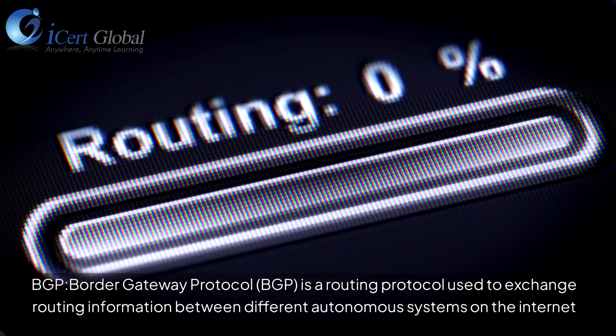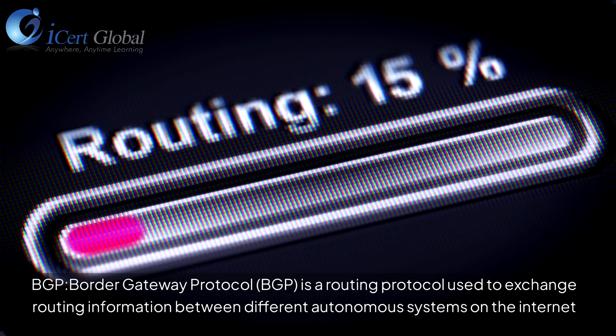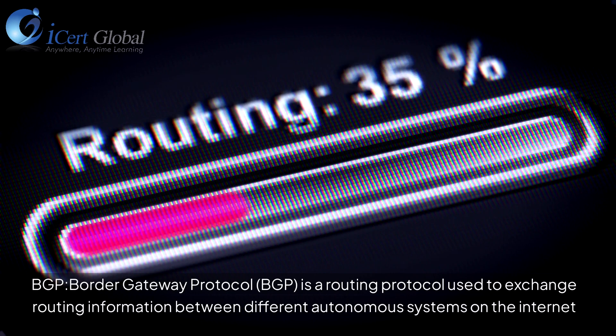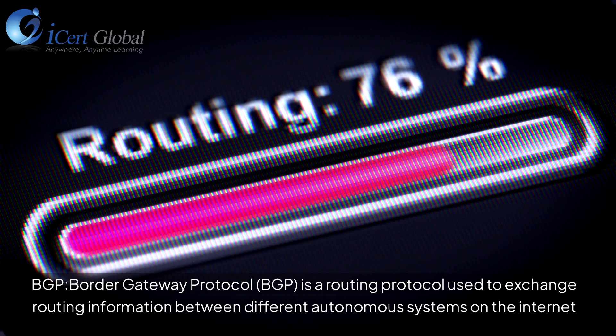BGP, Border Gateway Protocol, is a routing protocol used to exchange routing information between different autonomous systems on the Internet.